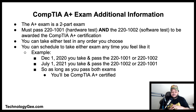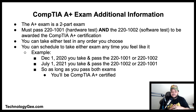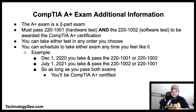The CompTIA A+ certification is a two-part exam. You must pass the 220-1001, known as the hardware test, and the 220-1002, known as the software test, in order to be awarded the certification. You can take either test in any order and schedule them days, weeks, or months apart. As long as you pass both, you'll be awarded the certification, which goes into effect on the day you pass the second exam.